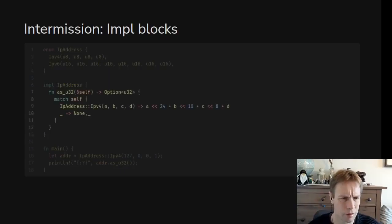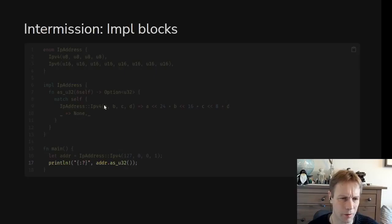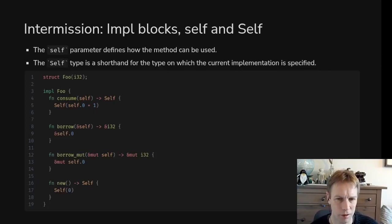Just to repeat: once we've defined this method as_u32 we can call it as a method on an instance of that thing. Let's talk a bit more about self — and notice that there are two selves that are really quite different: lowercase 's' self and uppercase 'S' Self.